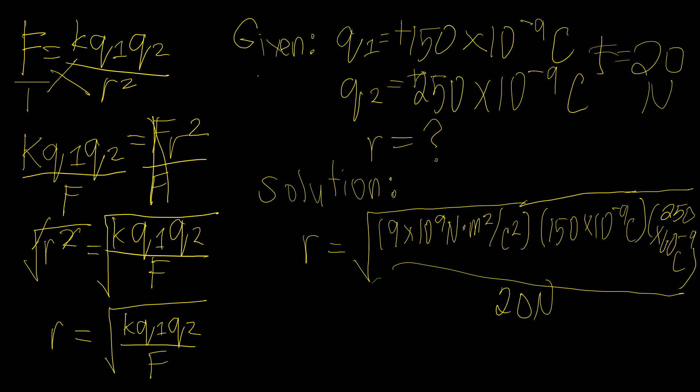We will extract the square root of this. Using the calculator, we arrive at 4.11 times 10 raised to negative 3 meters. But the problem requires that the distance should be in centimeters.